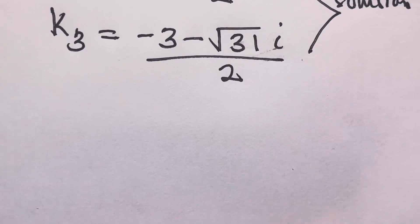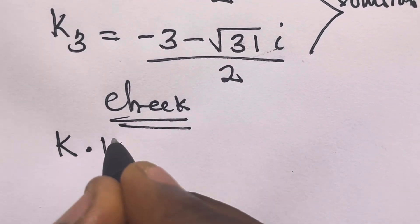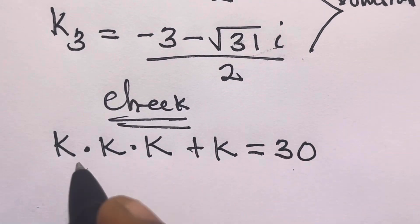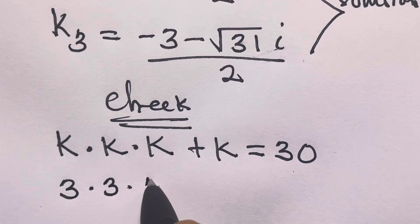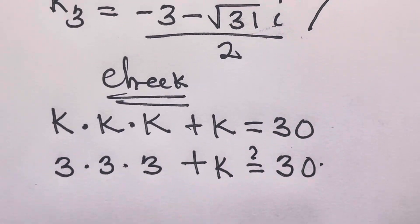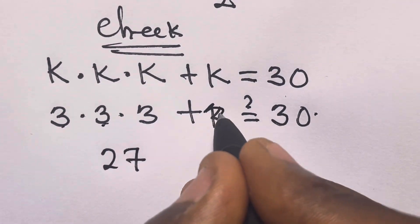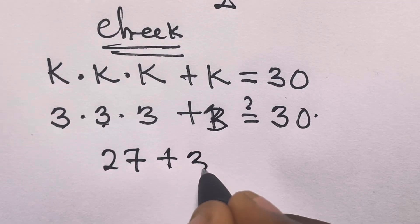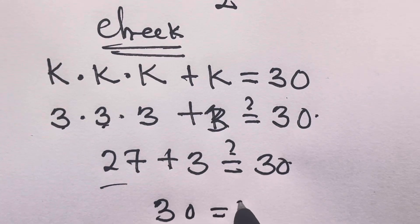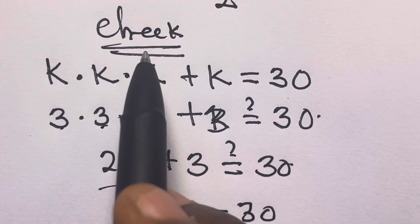Let's verify with the real solution. We check k times k times k plus k equals 30 with k equals 3: 3 times 3 is 9, times 3 is 27, plus 3 equals 30. So 30 equals 30 — our real answer checks out correctly.